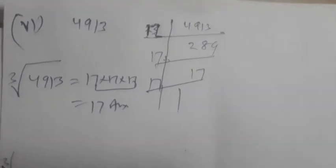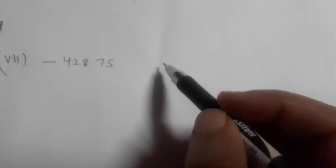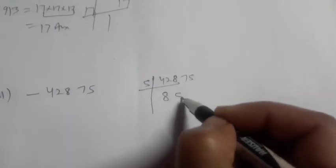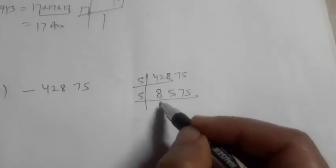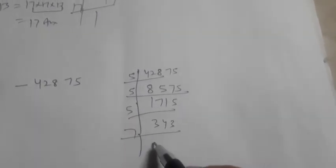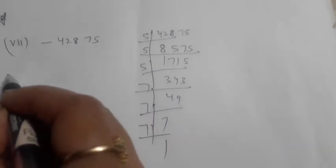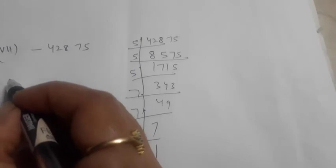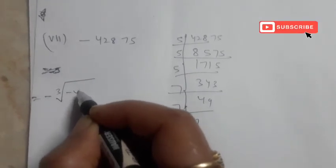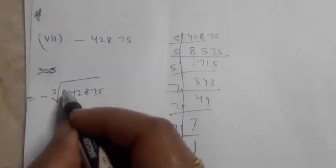Now come to the seventh part. The seventh part is minus 42875. For the prime factorization: it will go by 5 — 8575. Then by 5 again: 1715. Then by 5 again: 343. Then it will go by 7: 49. Then by 7: 7. Then by 7: 1. So the factors of 42875 are 5 × 5 × 5 × 7 × 7 × 7, and the cube root of minus 42875 is minus 5 × 7 = minus 35.